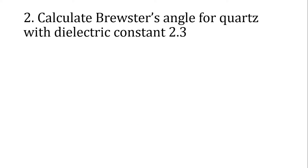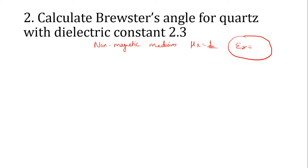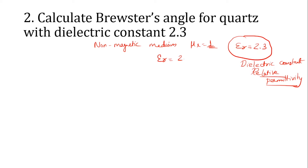Next problem: calculate the Brewster's angle for glass with a dielectric constant of 2.3. Nothing else is specified, so we assume it is a non-magnetic medium with μᵣ = 1. The relative permittivity, also called dielectric constant, is εᵣ = 2.3.